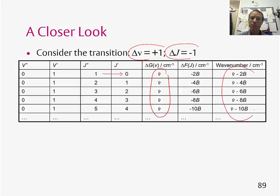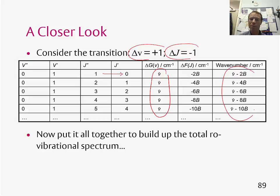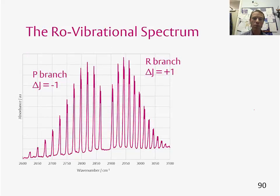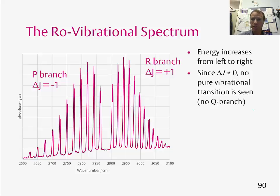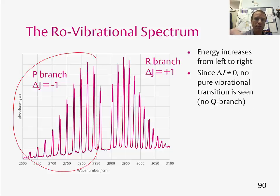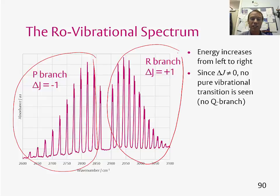Now we can put it all together and build up the total ro-vibrational spectrum. This is the spectrum for HCl. Energy increases from left to right. Since Δj equals 0 is not allowed, there is no pure vibrational transition in the centre. We have two branches: the P branch, where Δj equals minus 1, which is the lower-energy half of the spectrum, and the R branch on the other side, where Δj equals plus 1.